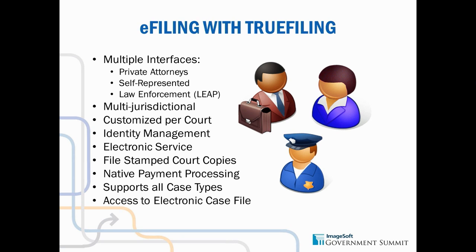True Filing also provides electronic service of documents. Private attorneys or law enforcement have the ability to serve those documents to individuals if they have their contact information — send out an email and track the audit trail of who has viewed and who has been served the filings. It supports all case types and can be expanded, back to that scalability of the solution. You can also provide access to your electronic case file through True Filing, making public access and discovery for opposing counsel much easier.